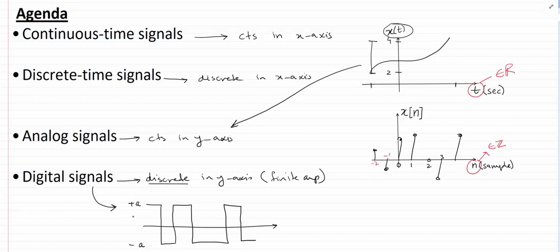An important observation is that for any signal it has to be either continuous time or discrete time, and it has to be either analog or digital. We can have a signal which is continuous time and analog, or continuous time and digital. Similarly, you can have a signal which is discrete time and analog, or discrete time and digital.